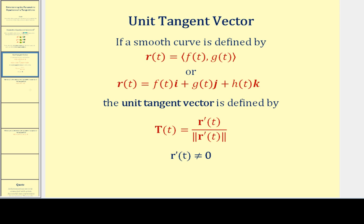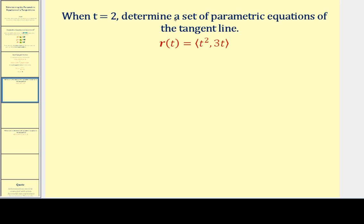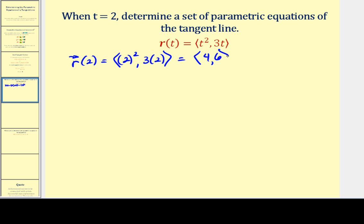Let's look at an example. When t is equal to two, we want to determine the parametric equations of the tangent line to the given plane curve. Let's first find the point of tangency at t equals two — that's the terminal point of the vector produced by the vector valued function. The x component is 2² = 4 and the y component is 3×2 = 6, giving the point of tangency (4, 6).